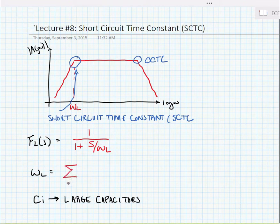So here, omega L is equal to the sum over I of all the individual pole frequencies that we're going to find, omega PI. This is going to be equal to the sum over I of 1 over R sub I times C sub I. So we'll find a time constant for every capacitor and sum the inverses.